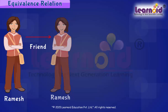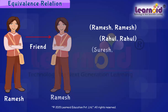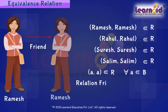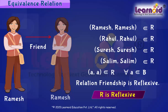We can write the ordered pairs (Ramesh, Ramesh), (Rahul, Rahul), (Suresh, Suresh), and (Salim, Salim) all belong to relation R of friendship. So ordered pair (A, A) belongs to R for all elements A belonging to set B. Hence relation R is reflexive.